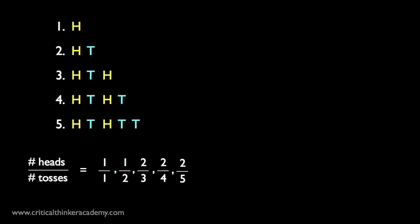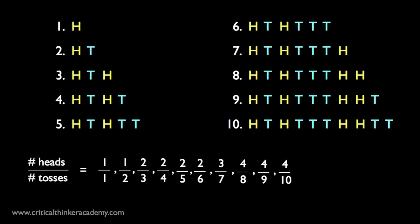Let's cycle through the next 5 tosses quickly. 6, 7, 8, 9, and 10. These ratios on the bottom are called relative frequencies. And a sequence like this is called a relative frequency sequence.